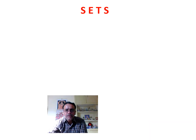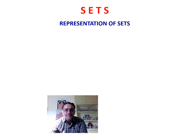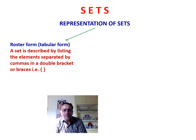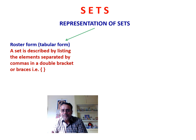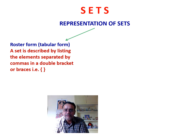So 'a' belongs to capital A, whereas 'b' does not belong to capital A. Now we move to a very important section: the representation of sets. Sets can be represented in two ways. The first way is roster form, also known as tabular form, where a set is described by listing elements separated by commas within braces.